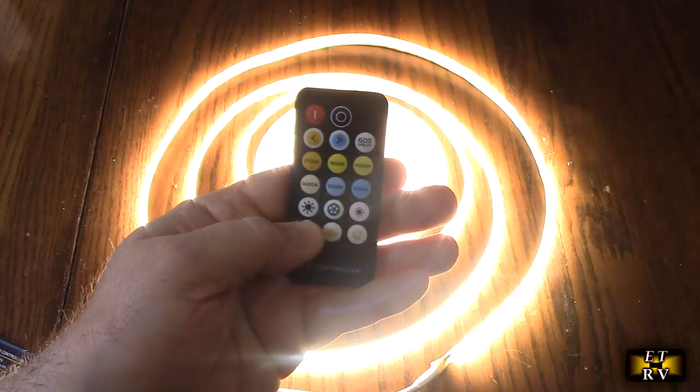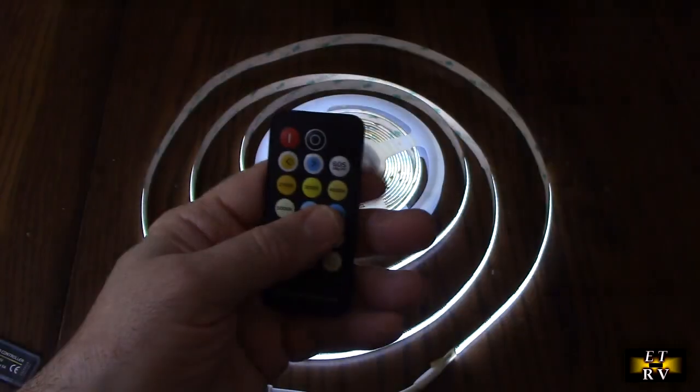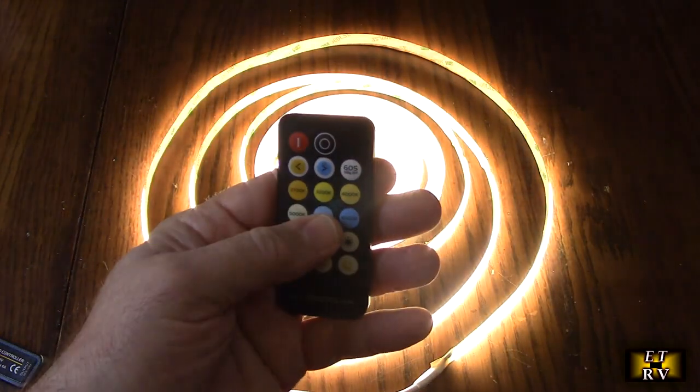And then it's got sunrise, sunset modes and see how warm that is because it's the sunrise. And you have the different colors right here, 2700K which is really nice and warm, and then you can go up to 6500K.